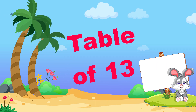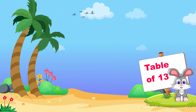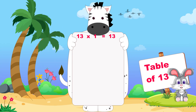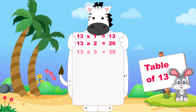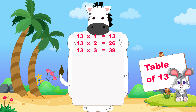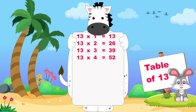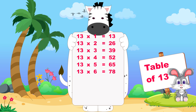Let's learn now table of thirteen. Thirteen ones are thirteen, thirteen twos are twenty-six, thirteen threes are thirty-nine, thirteen fours are fifty-two, thirteen fives are sixty-five.